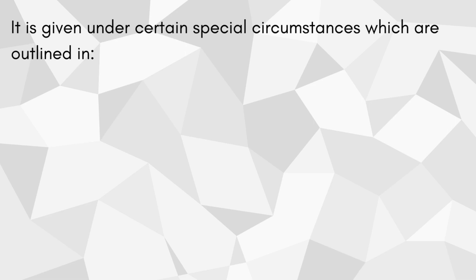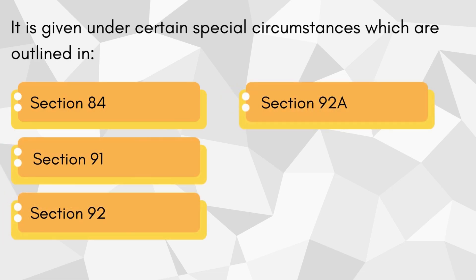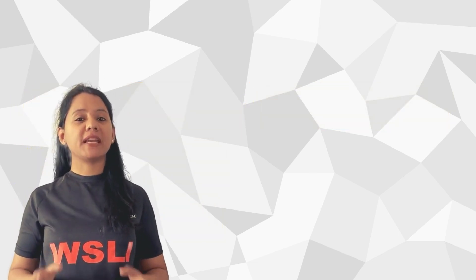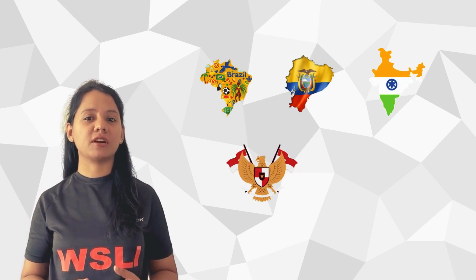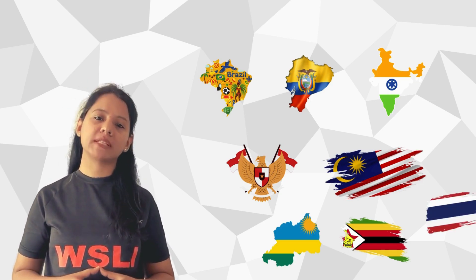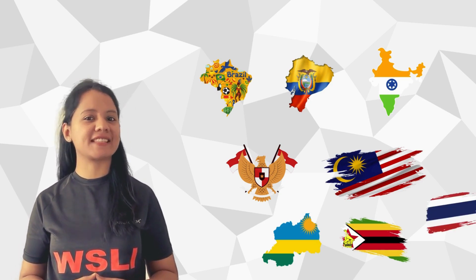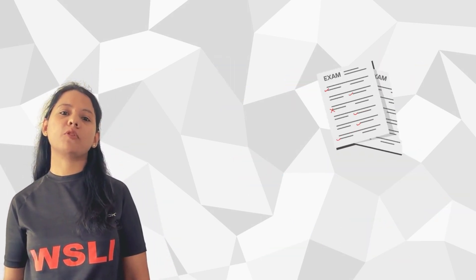It is given under special circumstances which are outlined in sections 84, 91, 92 and 92A of the Indian Patents Act. Over the years, many countries like Brazil, Ecuador, India, Indonesia, Malaysia, Rwanda, Zimbabwe and Thailand have issued compulsory licenses in certain cases.